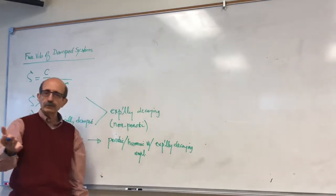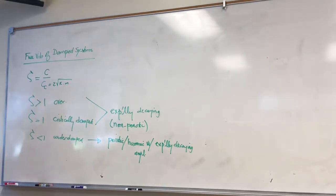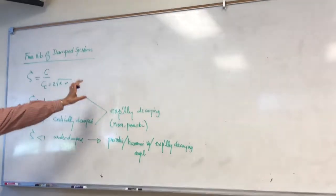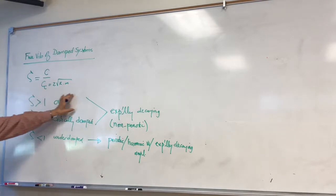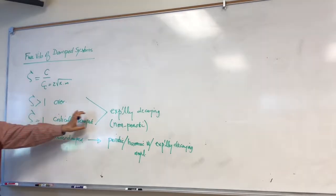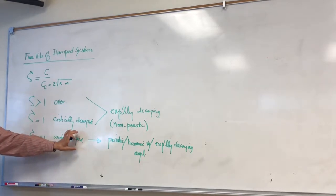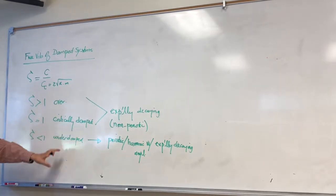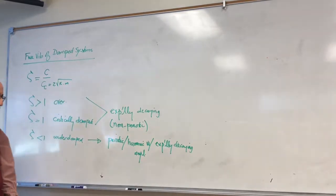We solved a simple problem to show the difference in terms of the response. In the overdamped case, it was just a sum of two exponential functions. The critically damped case was a product of a linear time-dependent function and an exponential function. In the underdamped case, we had an exponential time-dependent function which was the amplitude times a harmonic part.